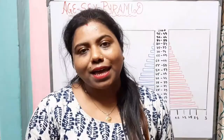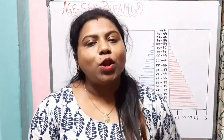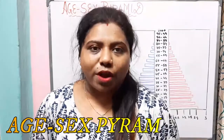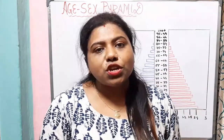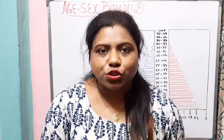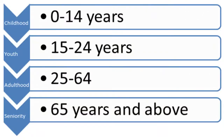Hello everyone, welcome back to my geography class. I hope all of you are doing well. Today we will discuss the topic of the age-sex pyramid from the chapter 'Population Composition' of Class 12. In the earlier video, we already discussed age-sex composition, where we learned that the population is divided into three groups: children between 0 to 14 years, adults or working-age population between 15 to 59 years, and the aged population above 60 years.